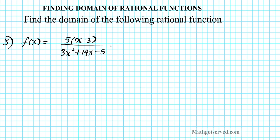As we went over in problems one and two, in order to find the domain of a function, we have to exclude any value that causes the function to have an undefined output from the domain. Any value that causes the denominator to attain a value of zero results in a function having an undefined output, so that number should be excluded from the domain.